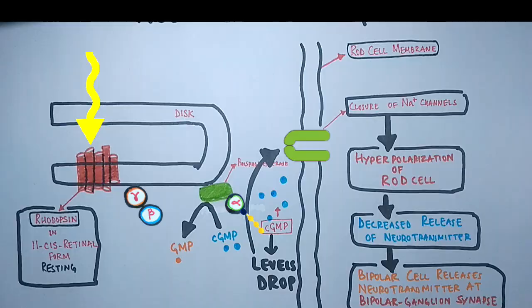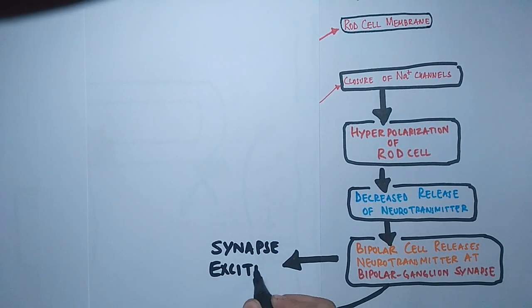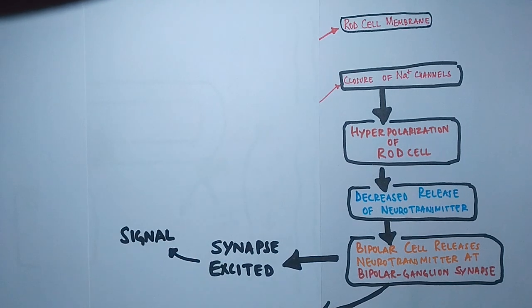And due to all these events, there will be synapse excitation which will convert the light signal into electrical signal, which causes the vision through photoreceptor cells.